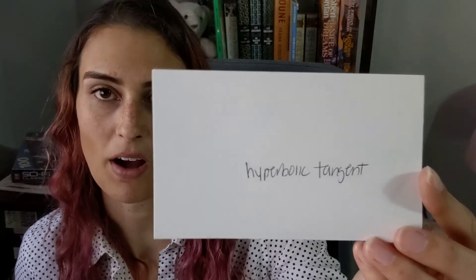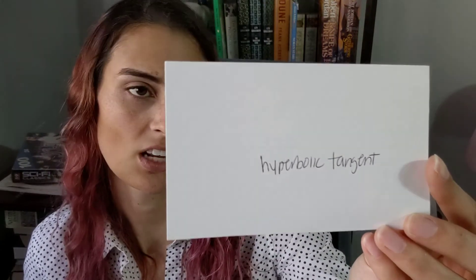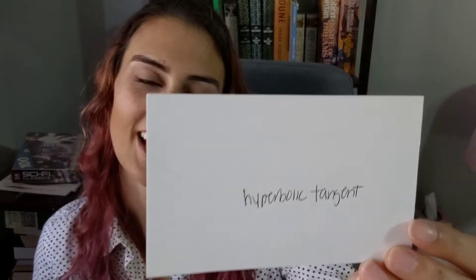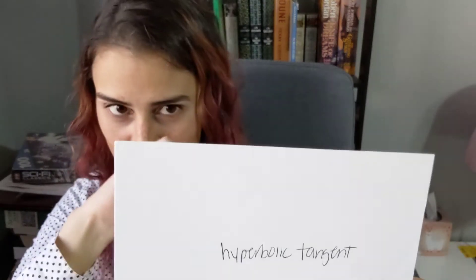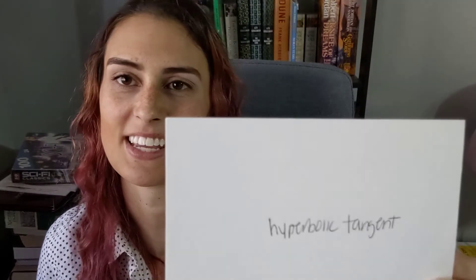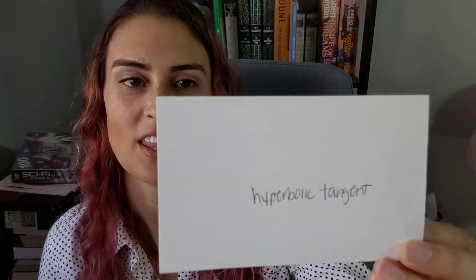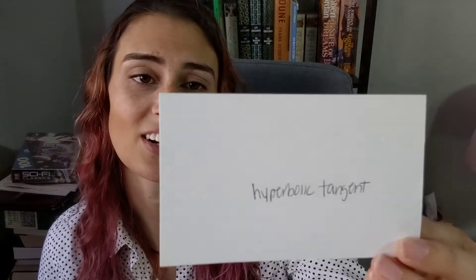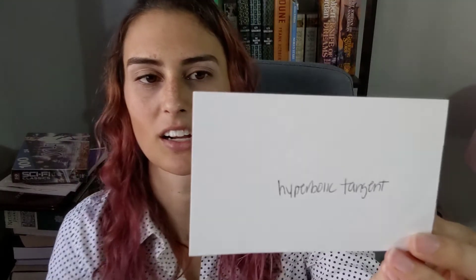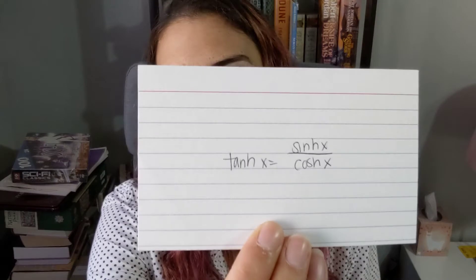Hyperbolic tangent, also called tanh, is equal to the hyperbolic sine over the hyperbolic cosine — sinh over cosh.